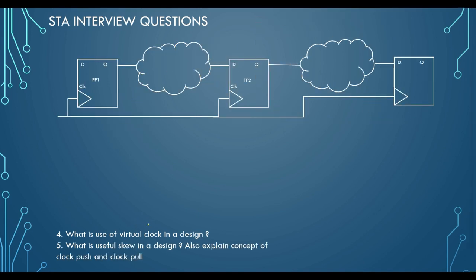A question asked when the candidate is doing very well is related to useful skew — also called clock push and clock pull. If you have a timing path from FF1 to FF2 and you have tried everything in the data path but it is still not meeting timing, you can make use of the clock path. Touching the clock path is not generally recommended but can be used as a last option when the timing critical path is not meeting.